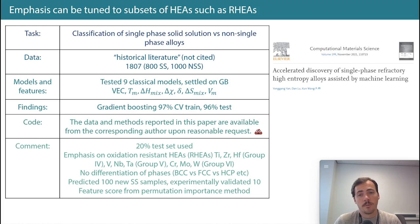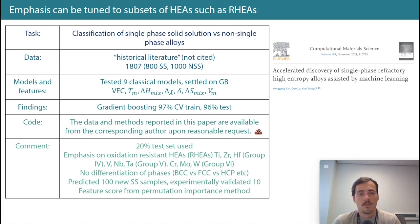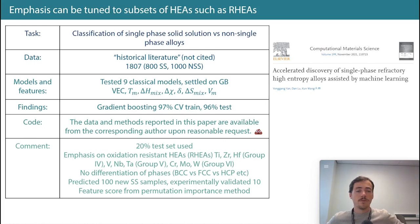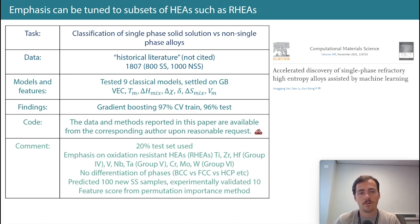They had an emphasis in their dataset on oxidation-resistant HEAs — specifically refractory HEAs with elements like titanium, zirconium, hafnium, niobium, and tantalum. They also only differentiated single-phase versus not single-phase — a simpler, binary classification. They used their model to predict 100 new single-phase samples and experimentally validated 10 of them. Feature scores came from permutation importance.